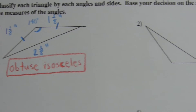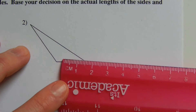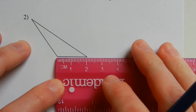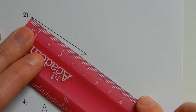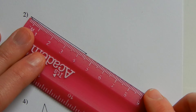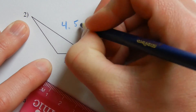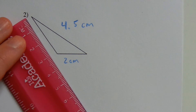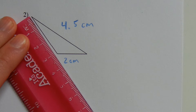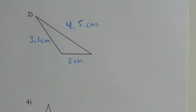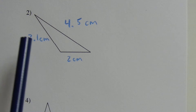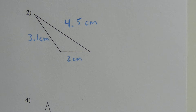Let's move on to number two. Using centimeters, the smaller side is approximately 2 centimeters, the largest side is approximately 4.5 centimeters, and the other side is approximately 3.1 centimeters. Since 2 does not equal 3.1 and 3.1 does not equal 4.5, no sides have equal length, so we know this is at least a scalene triangle.